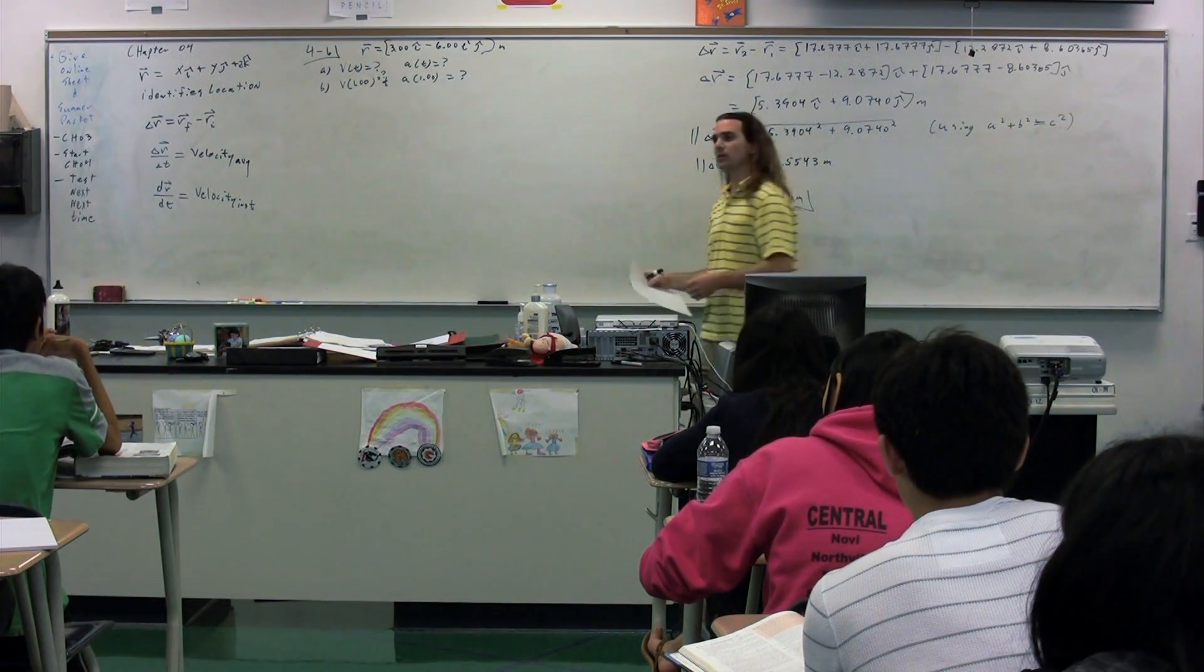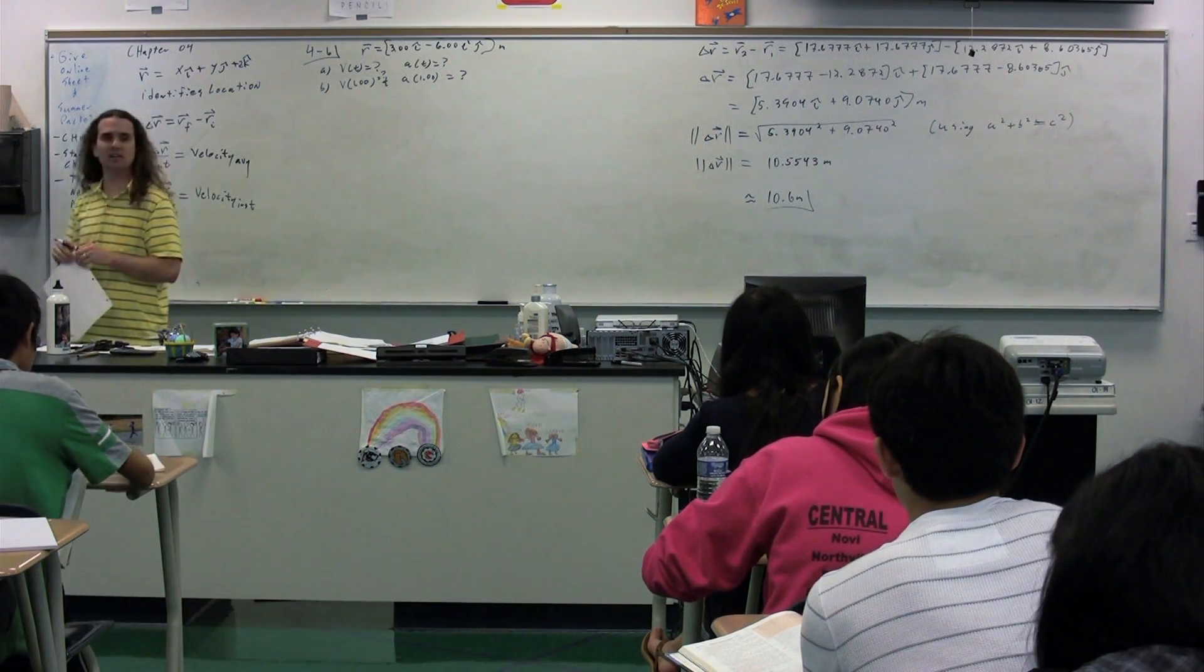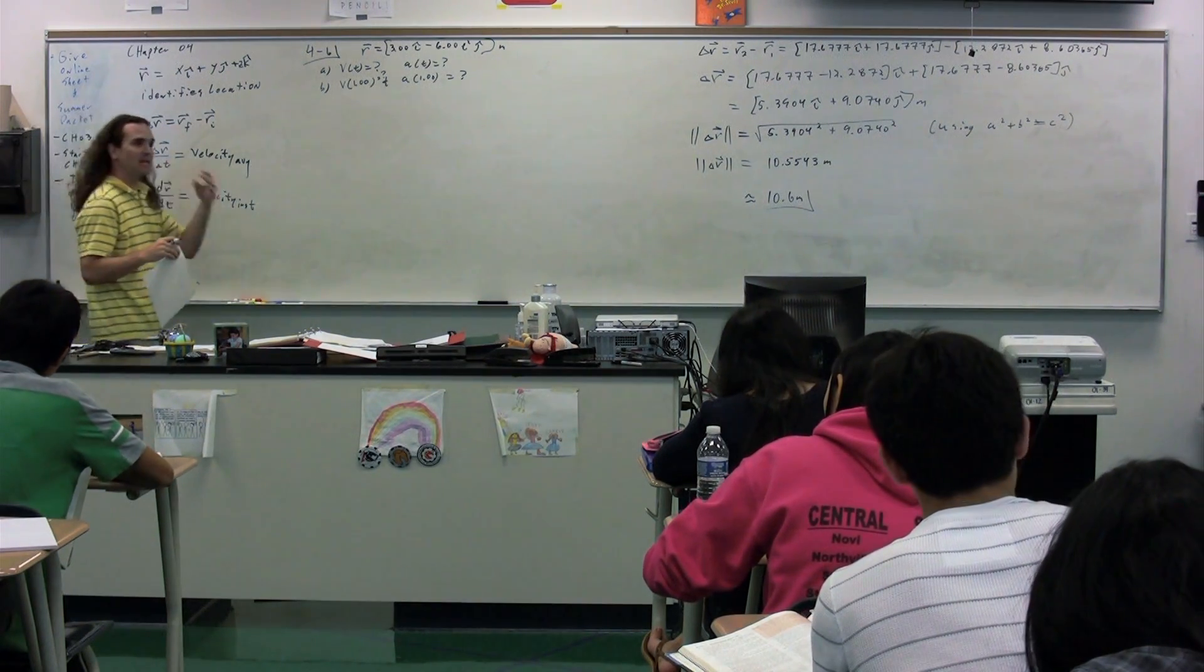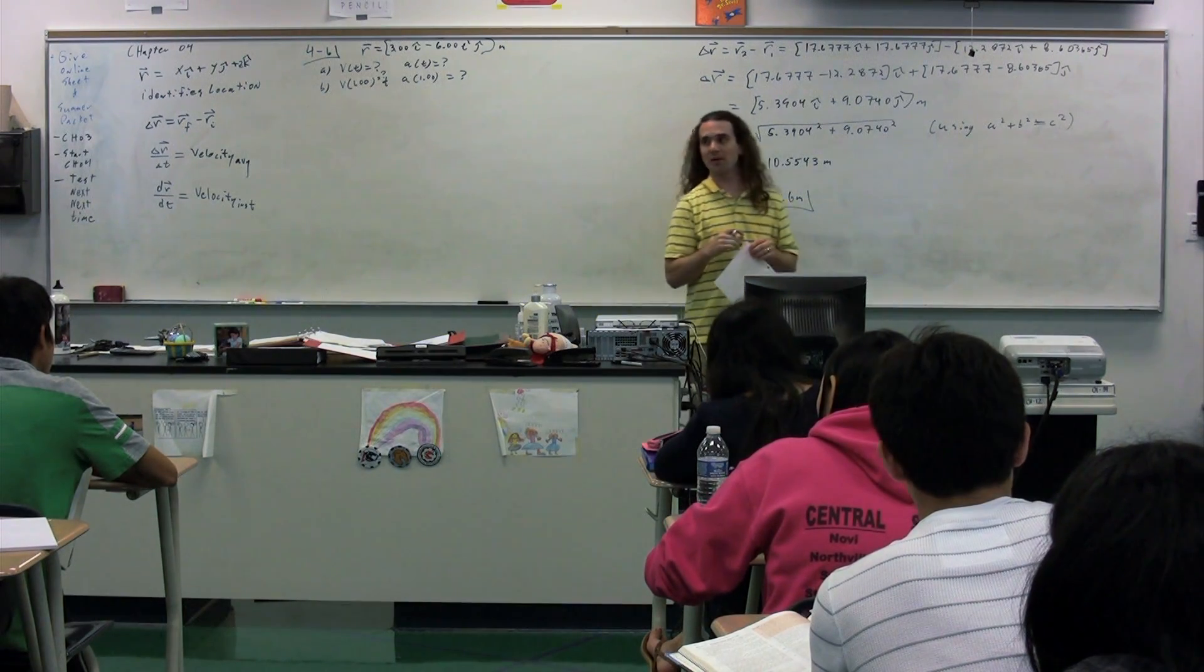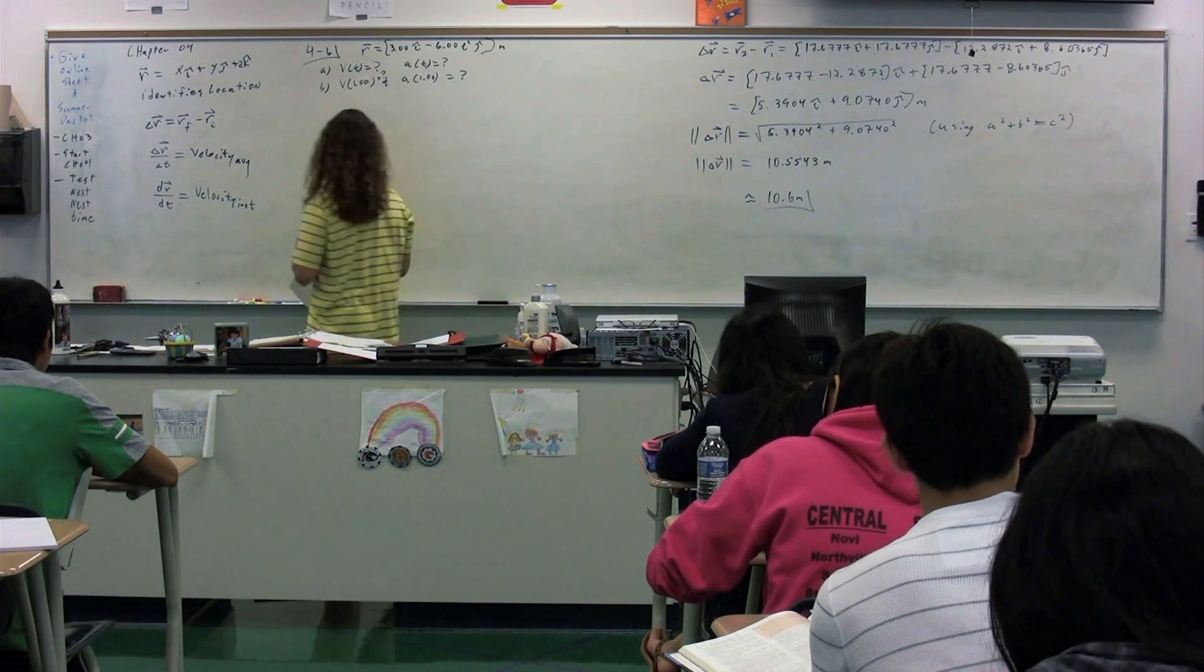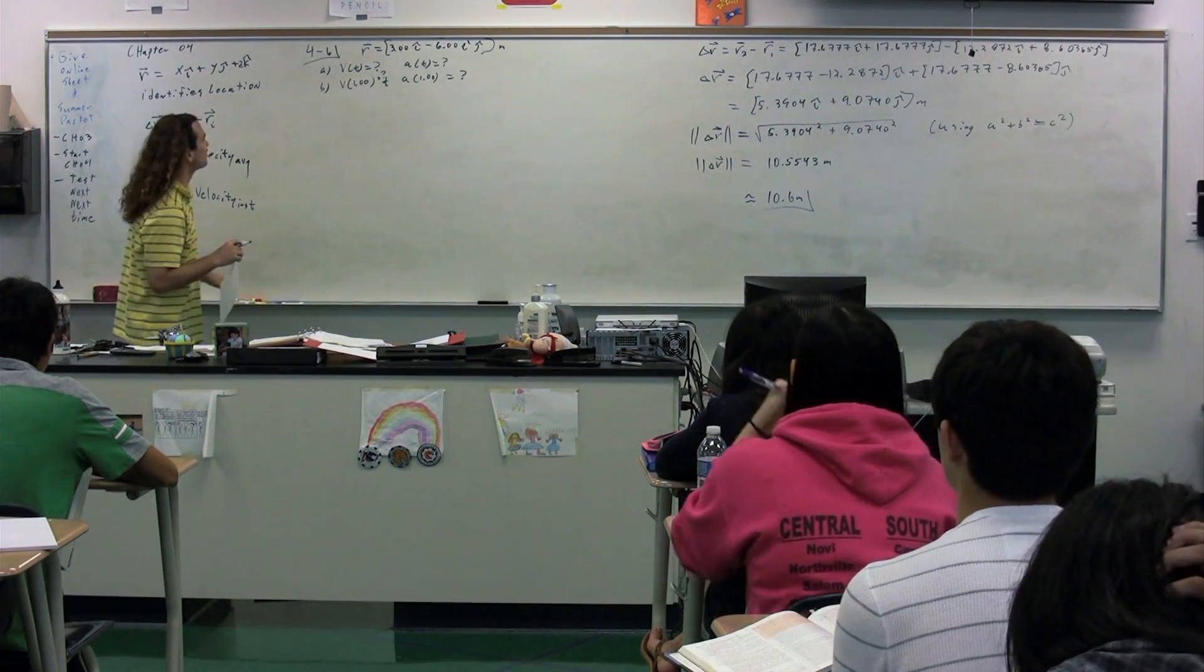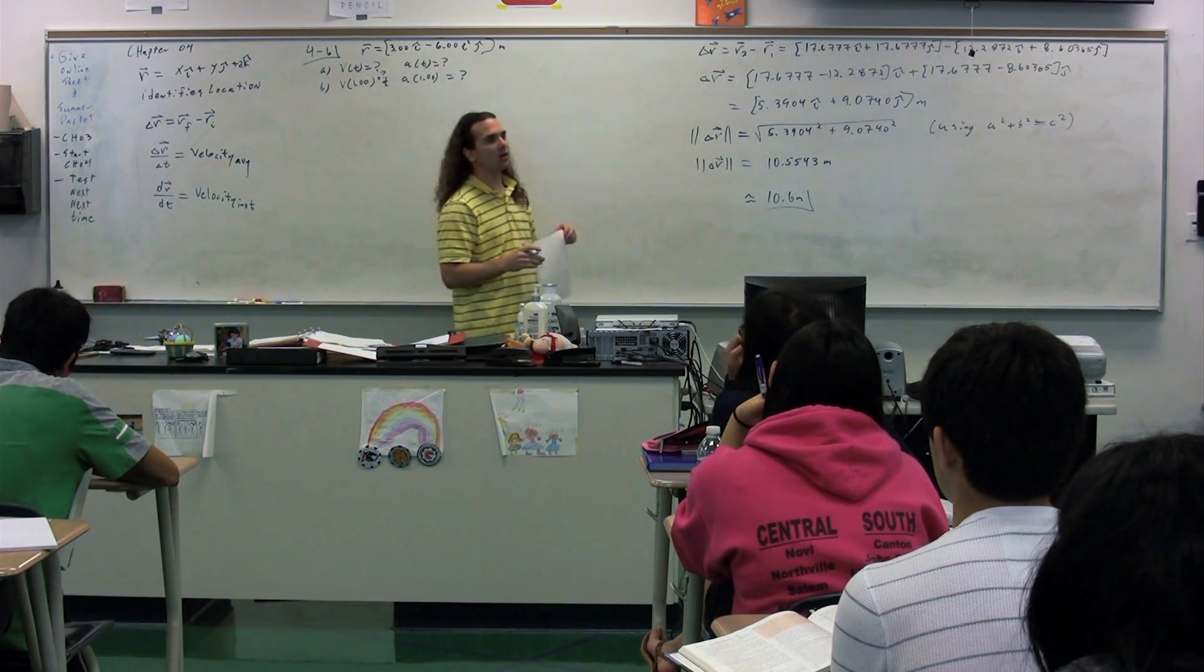So what we did before was we had described the position of an object, but we did it only as a position in the x direction, or the position in the y direction, but here, we're describing it in both the x and y direction. We have an xy plane here. We're describing it in both at the same time. So we should be able to figure out the velocity as a function of time.